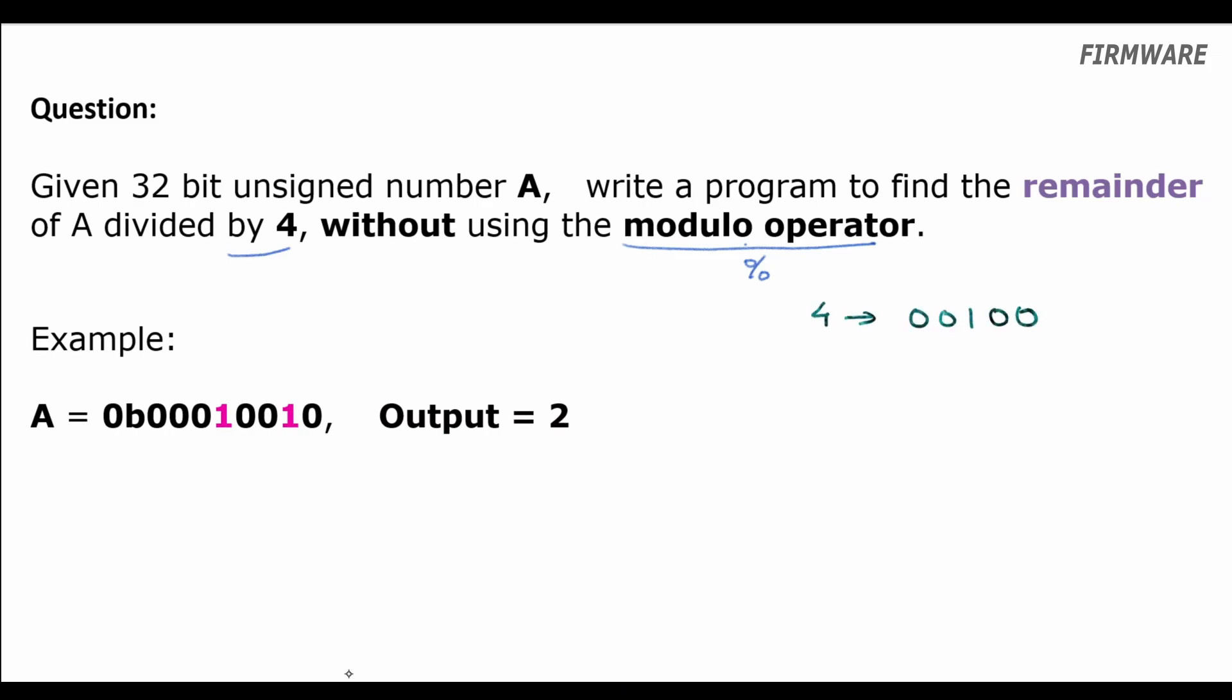Alright, let's look into a solution. First thing, for any number divided by 4, the remainder could only be either 0, 1, 2 or 3.